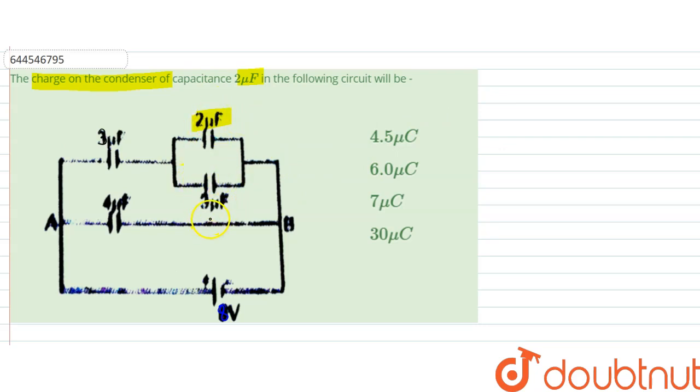Since 2 and 3 microfarad are in parallel situation, this is 2 and this is 3, right, this is 3 as well and this is 4. So 2 and 3 are in parallel situations, so the equivalent of this circuit will be 5 microfarad.